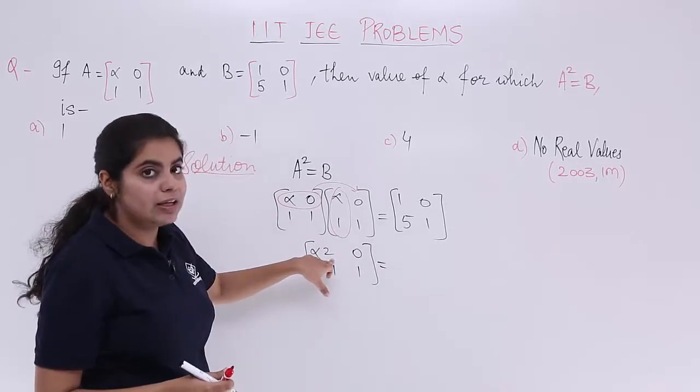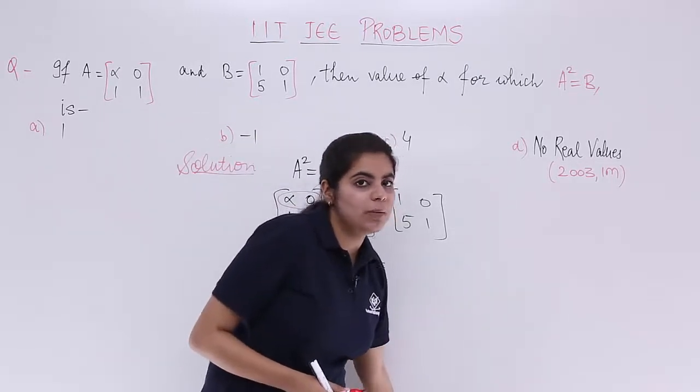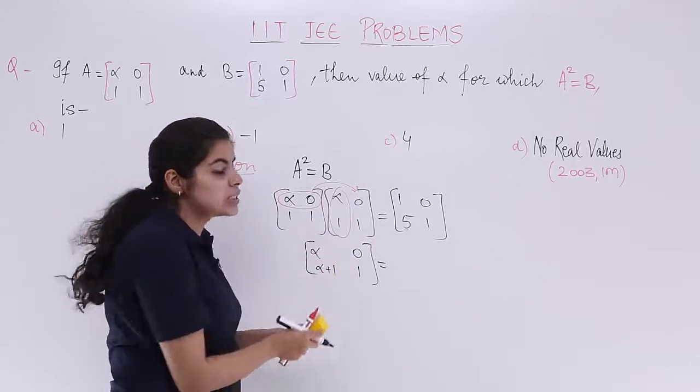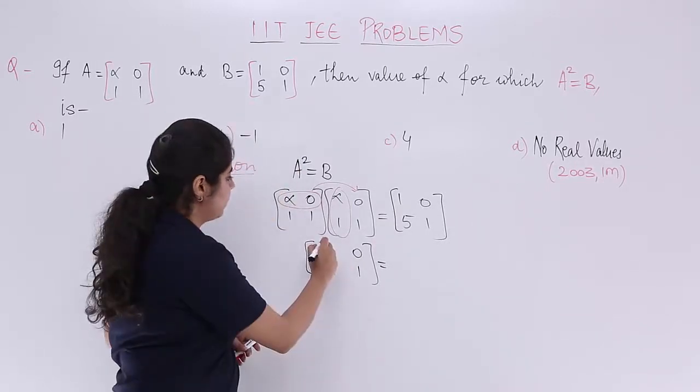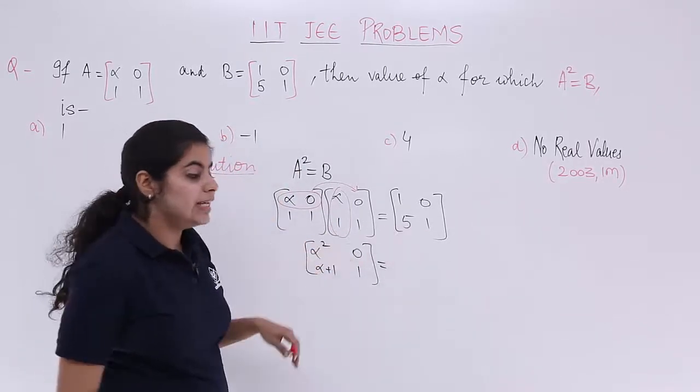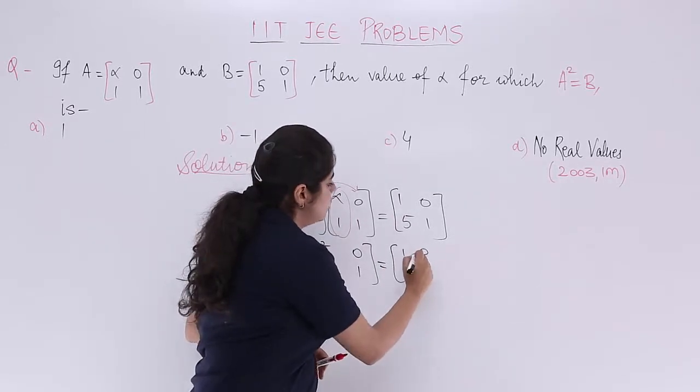This is not 2 alpha, this is alpha². Let's make the 2 a bit small and in the power so as not to get confused. This is alpha². Now it is equal to 1 0, 5 1.